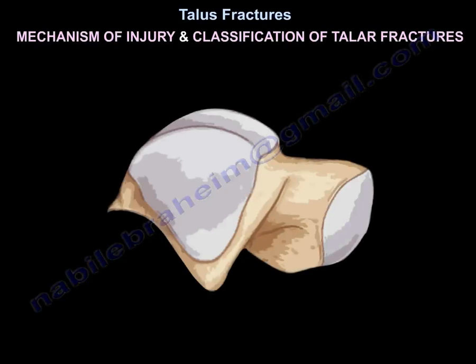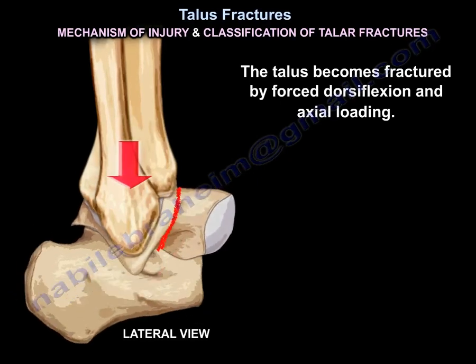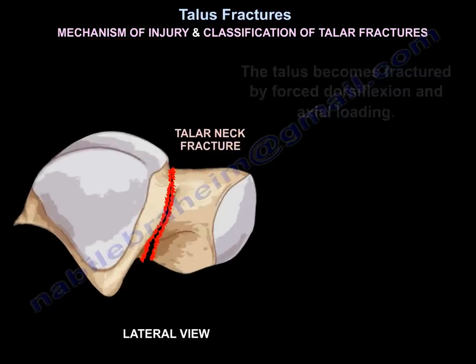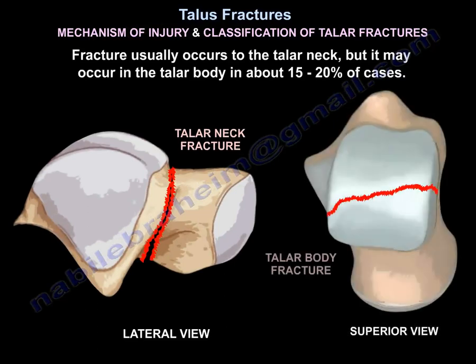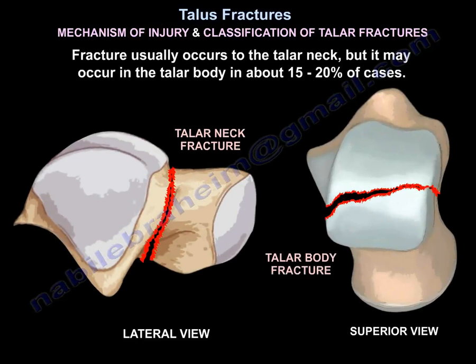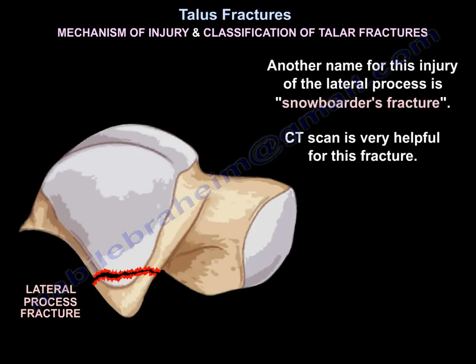The talus becomes fractured by forced dorsiflexion and axial loading. The fracture usually occurs to the talar neck, but may occur in the body in about 15 to 20% of cases. A lateral process fracture can be missed, as the patient may complain of lateral ankle pain and the injury mistaken for an ankle sprain. Another name for that injury is snowboarder's fracture.